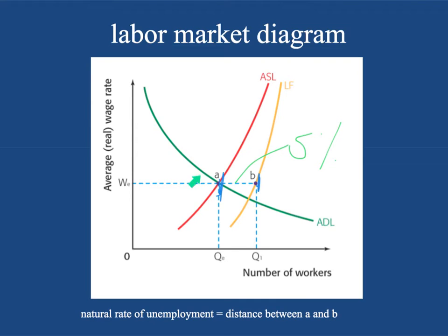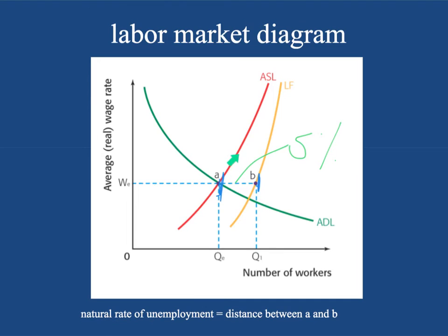As aggregate demand increases and more output is produced, you can assume that more labor is demanded. If aggregate demand goes out, they're going to produce more, which means average wage rates should go up, and you're going to cut down on the gap between the aggregate supply of labor curve and the total labor force. You'll have a situation — probably temporary — where unemployment is lower than the natural rate.